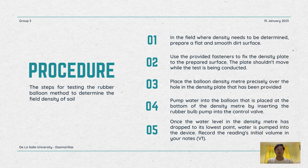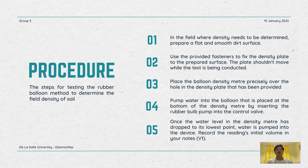These are the steps for testing the rubber balloon method to determine the field density of soil. Step 1: Prepare a flat and smooth dirt surface. Step 2: Use the provided fasteners to fix the density plate to the prepared surface — the plate shouldn't move while the test is being conducted. Step 3: Place the balloon density meter precisely over the hole in the density plate. Step 4: Pump water into the balloon placed at the bottom of the density meter by inserting the rubber bulb pump into the control valve. Step 5: Once the water level in the density meter has dropped to its lowest point, water is pumped into the device. Record the initial volume reading in your notes.